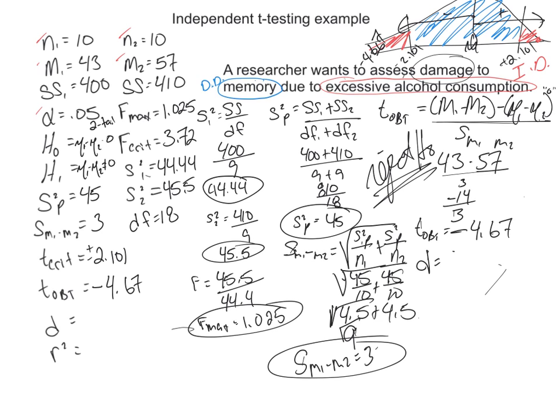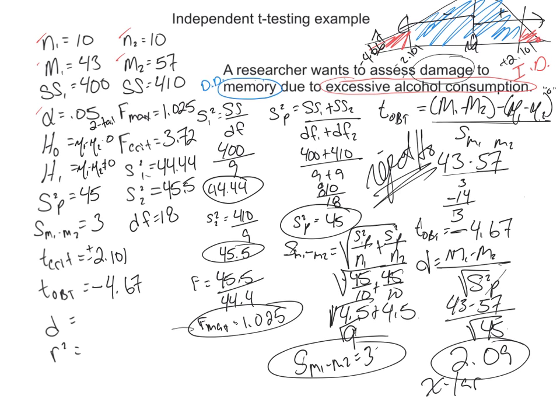We'll find Cohen's D first. Cohen's D is that mean 1 minus mean 2 divided by the square root of the pooled variance. 43 minus 57 divided by, was that our pooled variance? No. Sorry. 45. So square root of 45. D equals 2.09. So that's like an extra large effect size. That's really big.